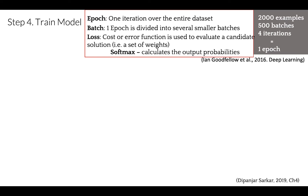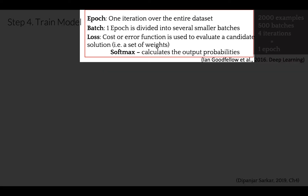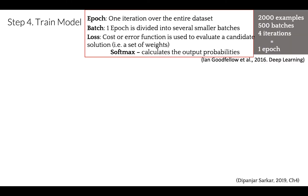Let's review some terminology. An epoch is a hyperparameter defined before training. One epoch is when the entire dataset passes both forward and backward through the neural network once. Since one epoch is too large to feed the computer at once, we divide it into smaller batches. A batch is the total number of training examples in a single batch, and an iteration is the number of batches needed to complete one epoch. For example, with a dataset of 2000 training examples divided into batches of 500, we need 4 iterations to complete one epoch.